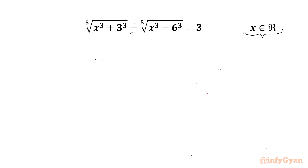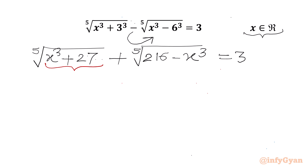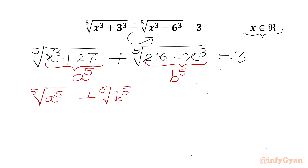Let's get started by taking the negative sign into this radical. So we get fifth root of (x³ + 3³). Now 3³ is 27, plus fifth root of (6³ minus x³). And 6³ is 216, minus x³, equal to 3. Now we will use substitutions: let the radicand x³ + 27 equal a⁵, and the radicand 216 minus x³ equal b⁵. So the first equation we can write is fifth root of a⁵ plus fifth root of b⁵ equal to 3.